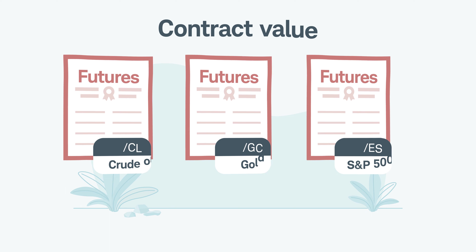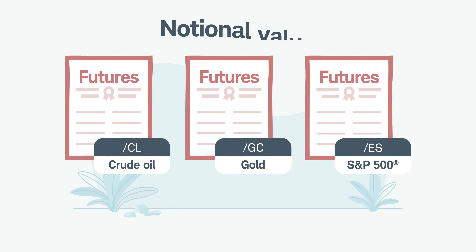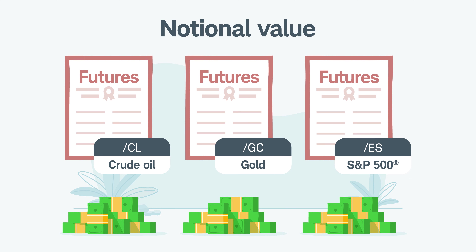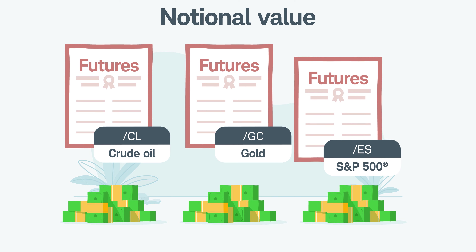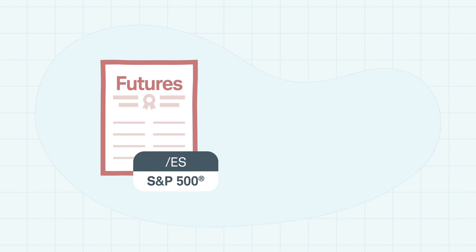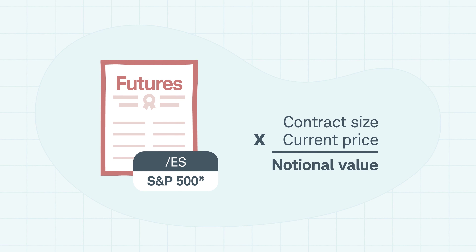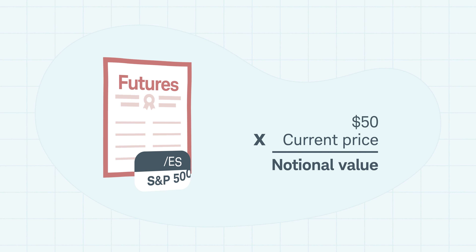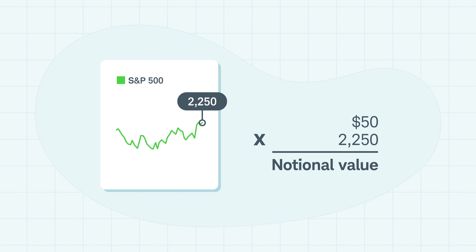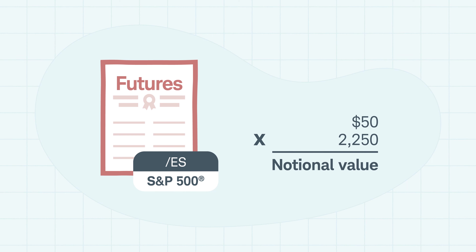Another component is contract value, also known as notional value. This is the current market value of the commodity represented in a futures contract. To calculate this, multiply the size of the contract by the current price. The e-mini S&P 500 futures contract is $50 times the price of the index. If the index is quoted at $2,250, the notional value of one e-mini contract would be $112,500.